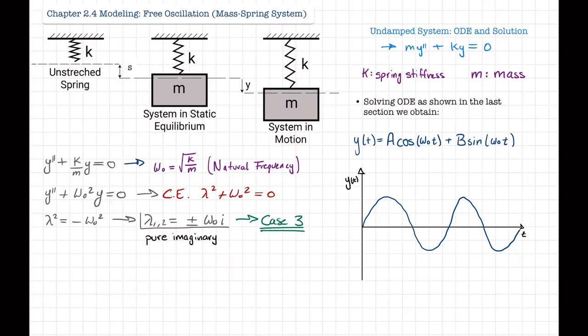But if you pull the mass down, applying some displacement y, the spring will stretch more, and when you let it go the mass will go up again, then down, and it will continue to oscillate forever if there's no friction in the system. To model this we have a second-order homogeneous differential equation, where y is displacement, y' is velocity, and y'' is acceleration.